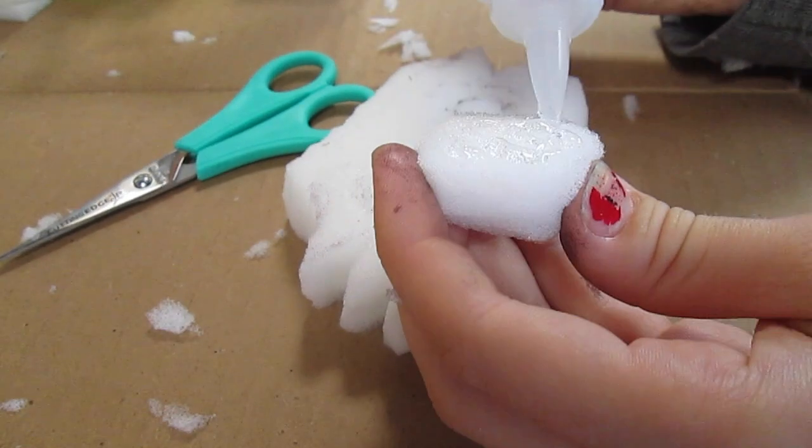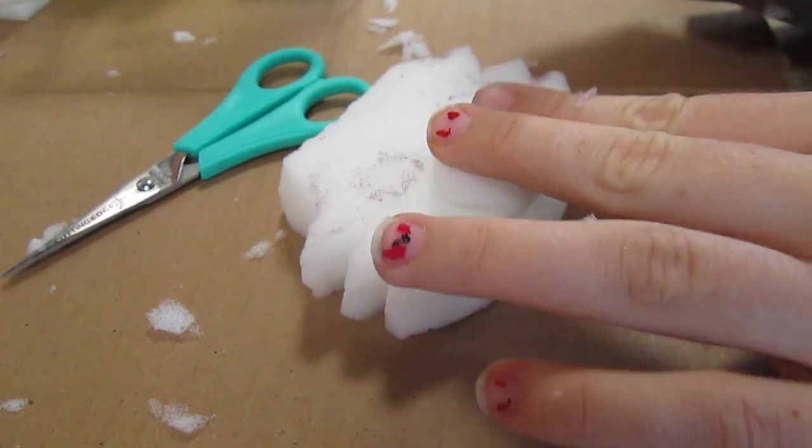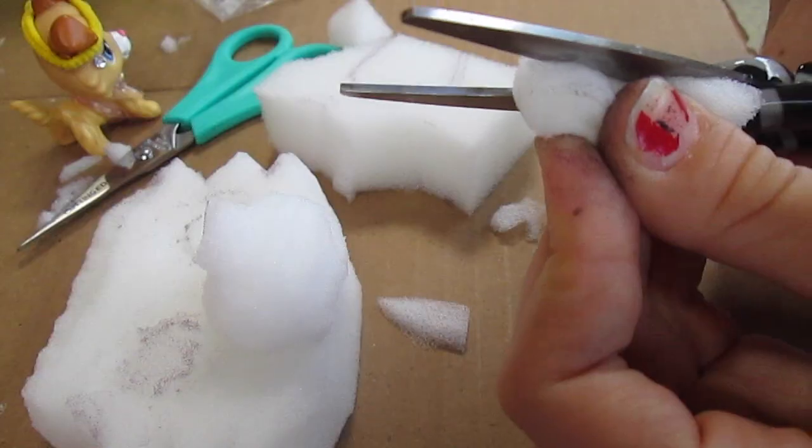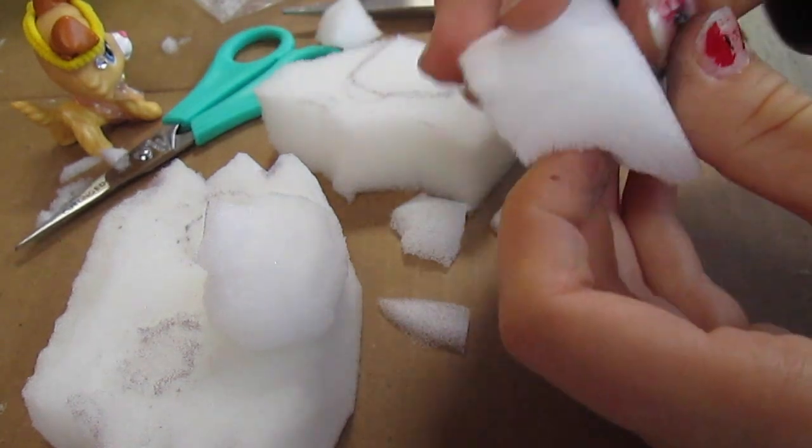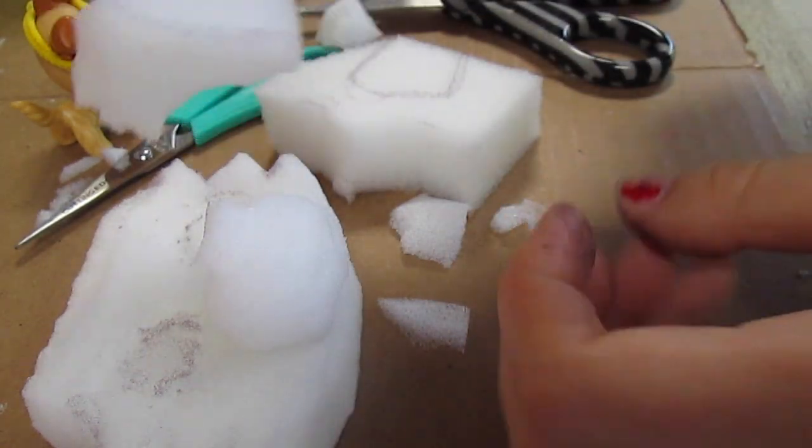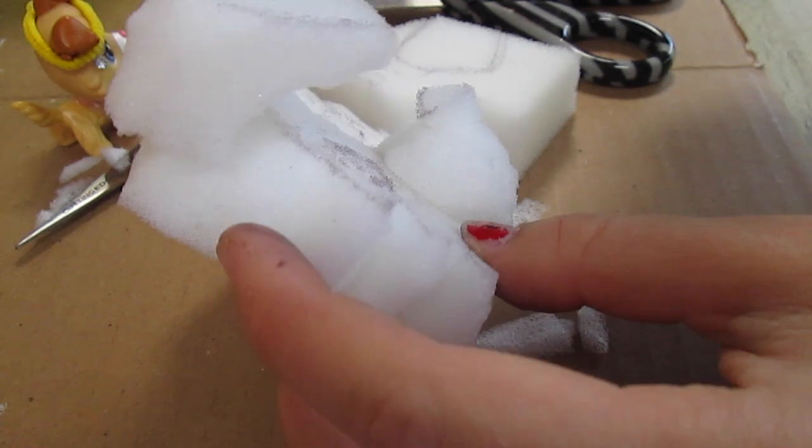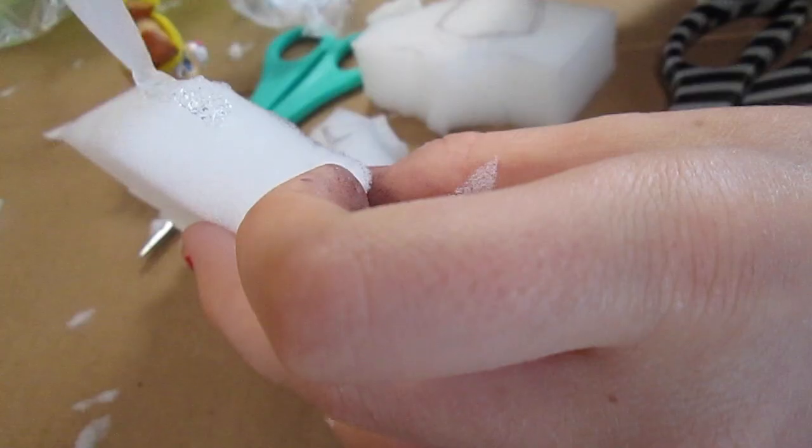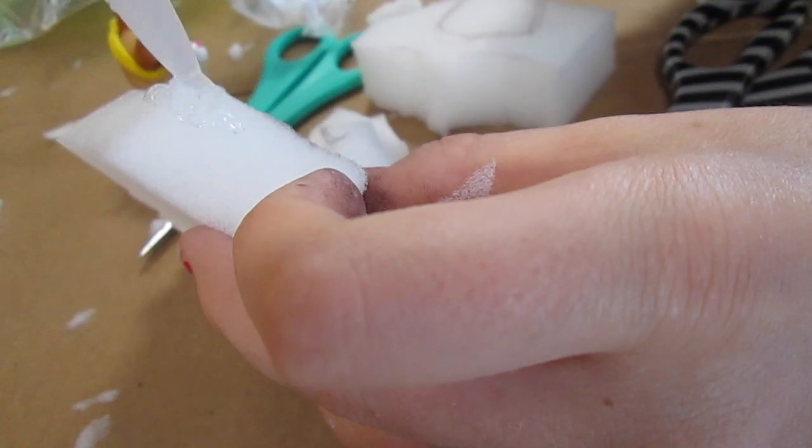Now glue it on where you want it with fabric glue. Now I am gluing on the nose. I have made the ears so that it will go onto this base like this. Now I'll just glue them on.